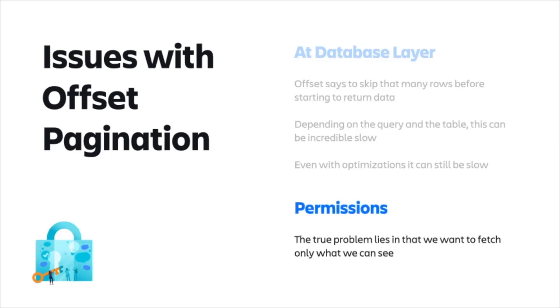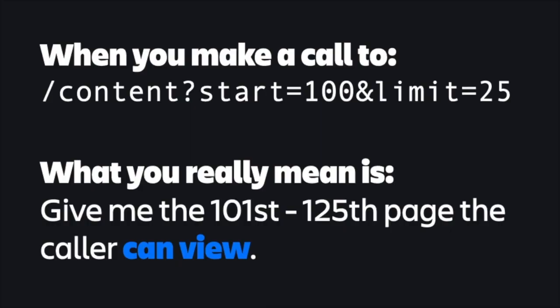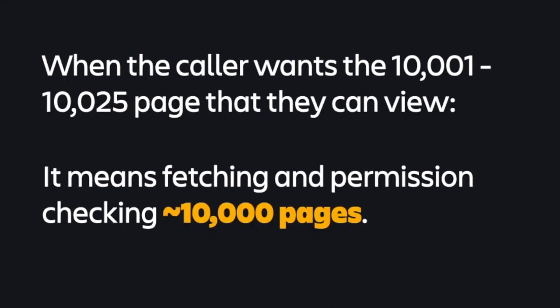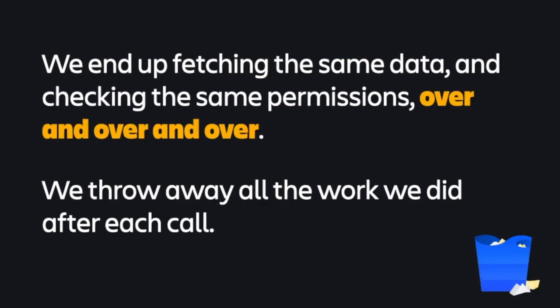Where the issue is seen most clearly is with permissions checking. Say you make a call to the V1 content endpoint and ask for a set of 25 results with a start parameter of 100. What you're really asking for is: can I have the 101st to the 125th piece of content that I can view? This is relatively harmless at low offsets — the server is responsible for permissions checking 125 pieces of content in the best case scenario. However, say the caller now wants the 1,001st to the 10,025th piece of content. This now translates to fetching and permissions checking around 10,000 pieces of content in the best case scenario. As we continue to scroll through the data set, we're causing that same strain on the server call after call, permissions checking relatively the same set of data over and over again.